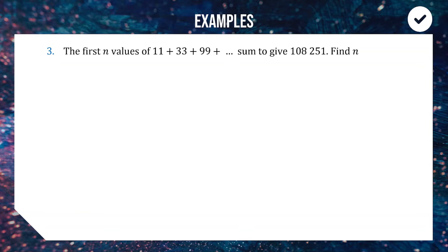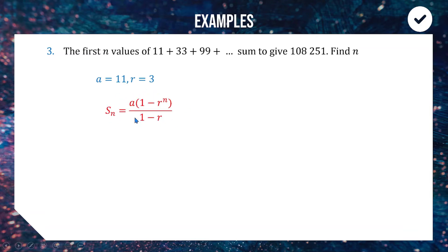Next example: the first n terms of a geometric series sum to 108,251 — find n. This is a backwards version: we know a, we know r, we know the sum, and we need to find n. Starting with a = 11, r = 3, we set the sum formula equal to 108,251 and solve for n.